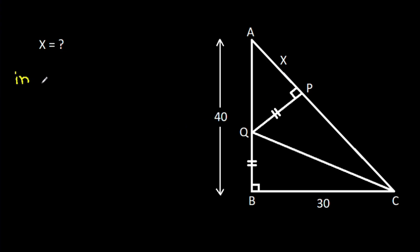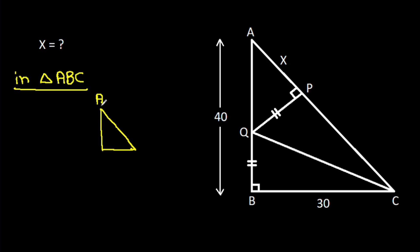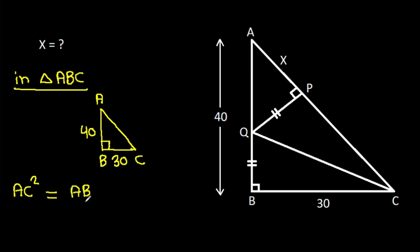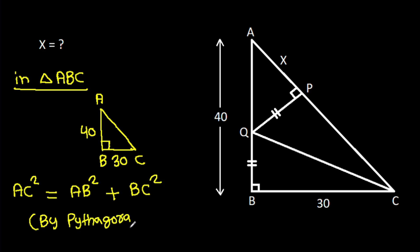In triangle ABC, AB is 40, BC is 30, and this angle is 90 degrees. So, AC squared, it will be AB squared minus BC squared by Pythagoras theorem.